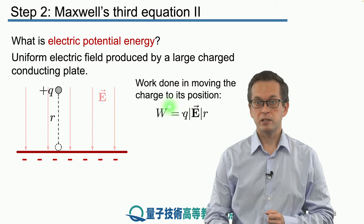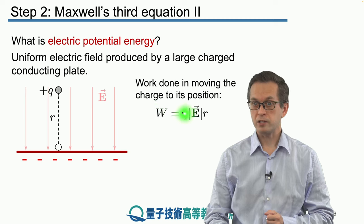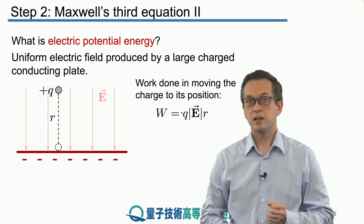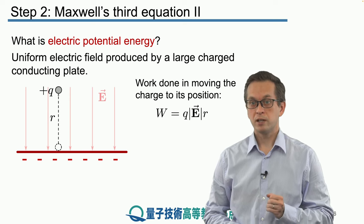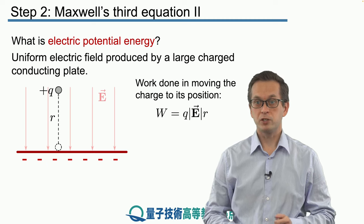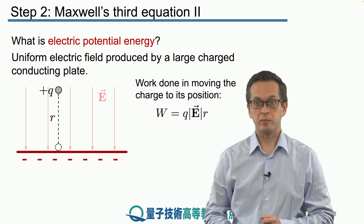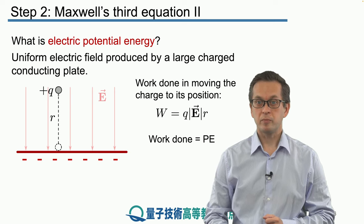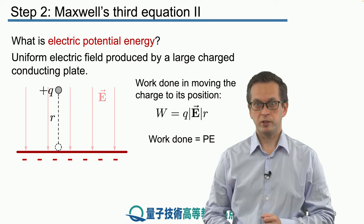And we know that this work is just given by the force times the distance. Force, in this case, is just the magnitude of the charge times the magnitude of the field, and then times r, which is the distance away from the charged plate. So W = |E|r. So we see that the work done is, again, the potential energy, the electric potential energy.